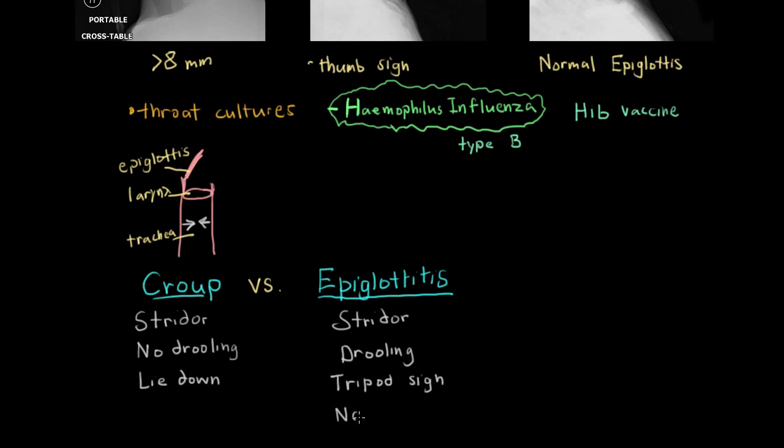And finally a major difference is in epiglottitis there's no cough. Because there are no cough receptors being stimulated. The epiglottis doesn't have any cough receptors. Whereas when you touch the larynx or the trachea, it can very strongly stimulate cough. In fact, you actually get what's known as a barking cough.